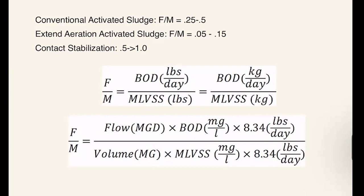The F-to-M ratio is unitless. After we cancel all our units — such as milligrams per liter for BOD concentration and milligrams per liter for MLVSS — those cancel out. The 8.34 conversion unit also cancels out because it appears on both sides of the equation. The million gallons on the flow and the million gallons on the volume cancel, leaving a unit of per day, but this is considered unitless since the F-to-M is just the value for a given day.